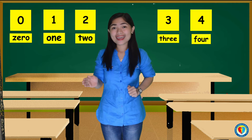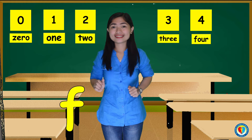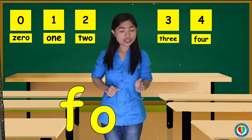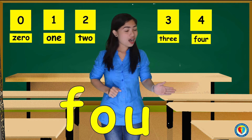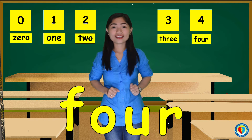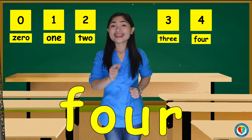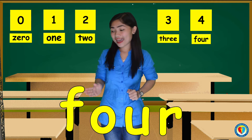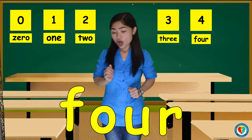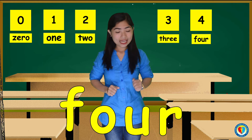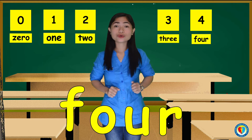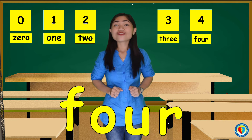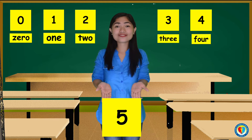For the number 4, that's F, O, U, R. Four. Can you follow me, kids? F, O, U, R. Four.